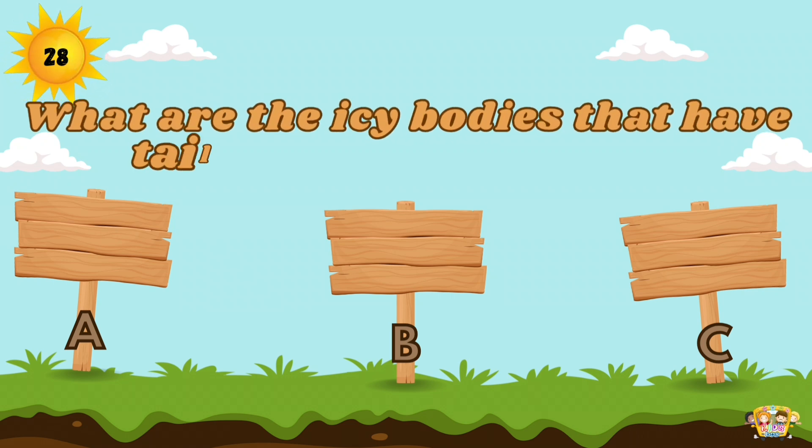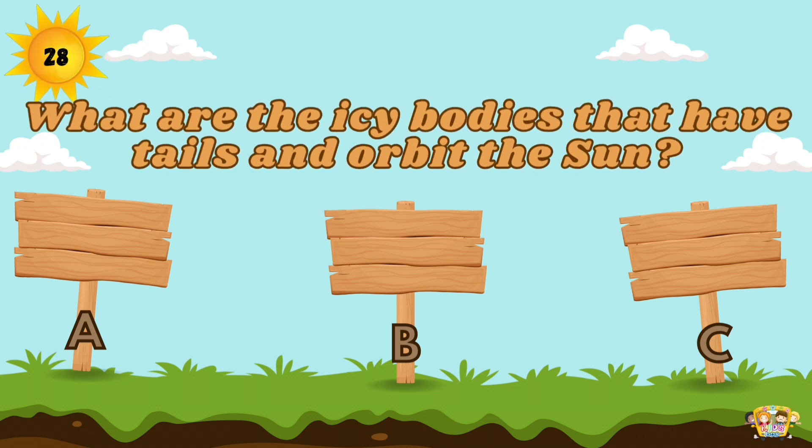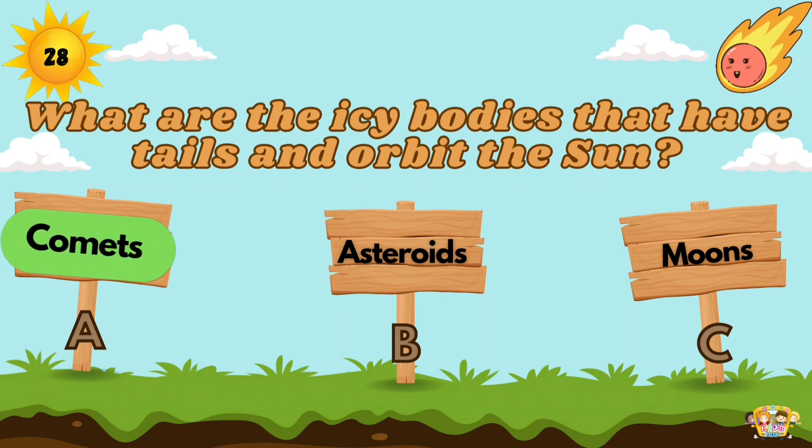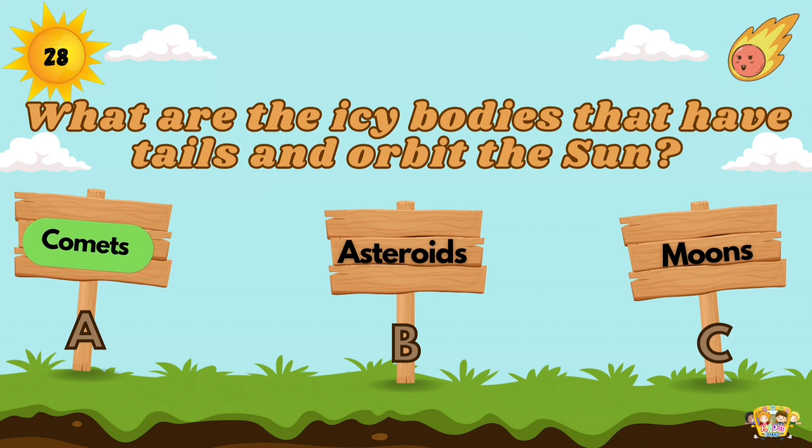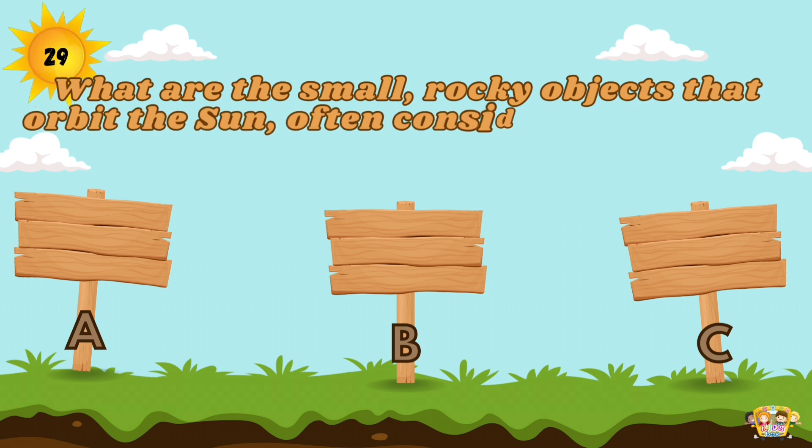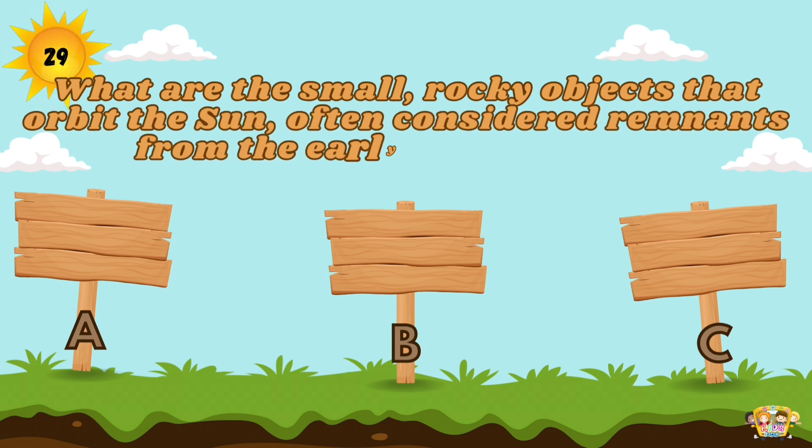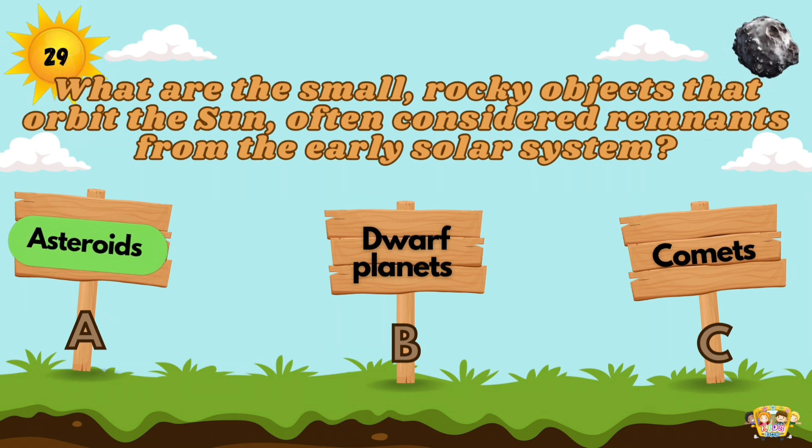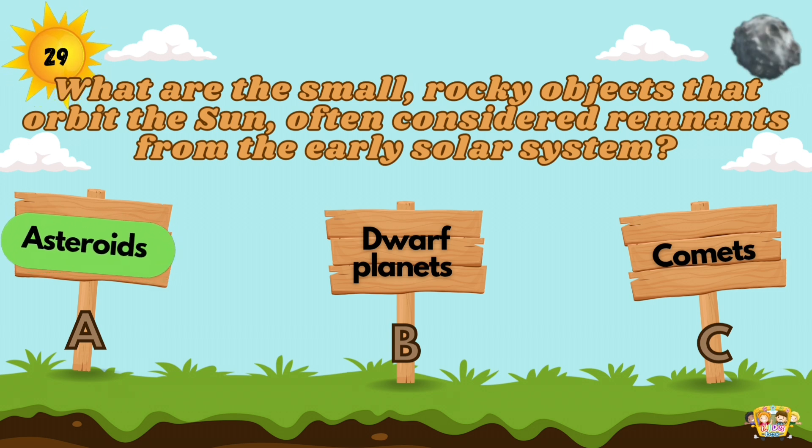What are the icy bodies that have tails and orbit the Sun? Comets are large objects made of dust and ice that orbit the Sun. What are the small, rocky objects that orbit the Sun, often considered remnants from the early solar system? Asteroids are small, rocky bodies that revolve around the Sun.